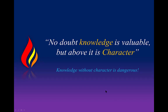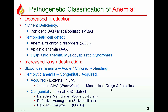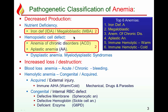Welcome. I'm covering pathology of deficiency anemias — mainly iron deficiency, megaloblastic, and briefly anemia of chronic disorders. In the classification of anemia, the decreased production group includes the top six anemias: two deficiency anemias, two deficiency of blast cell anemias, and two hemolytic anemias. I am covering the two major ones — iron and megaloblastic — and then anemia of chronic disorder and aplastic anemia briefly.